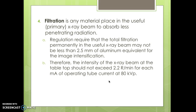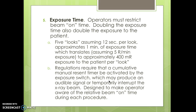Exposure time: the operator must restrict the beam-on time — doubling the exposure time doubles the exposure to the patient. If you take five looks at approximately 12 seconds per look, that's roughly one minute of exposure time, which translates to about 5 R per minute, or approximately 40 mR exposure to the patient per look. Regulations require that a cumulative manual reset timer be activated by the exposure switch, which may produce an audible signal or temporary interruption of the x-ray beam, to make the operator aware of beam-on time.